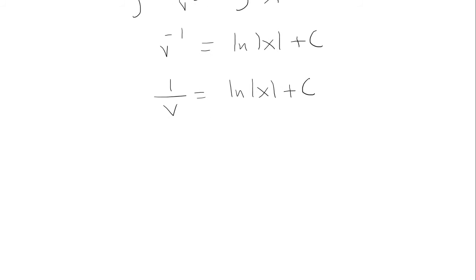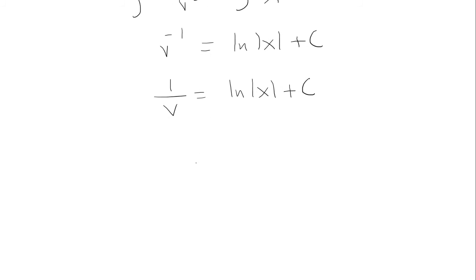So in the beginning we made a substitution. We said v was equal to yx. I'm sorry, we made a substitution. We said y equals vx. So that means that v is y over x. Okay, so we're going to plug that in here. And really, 1 over y over x is a reciprocal of y over x, which is just x over y.